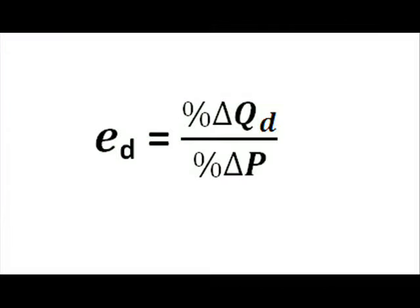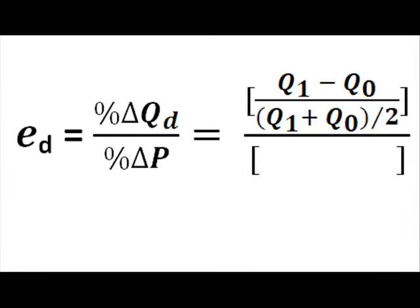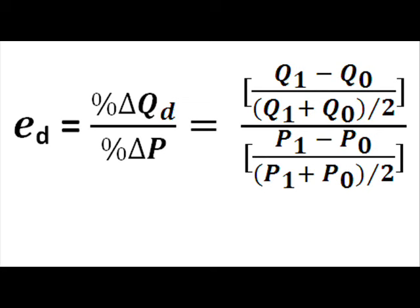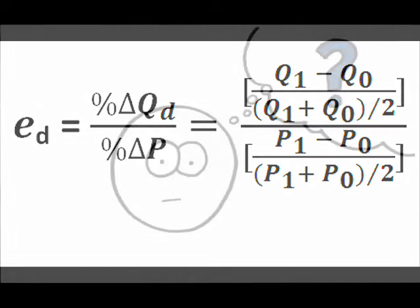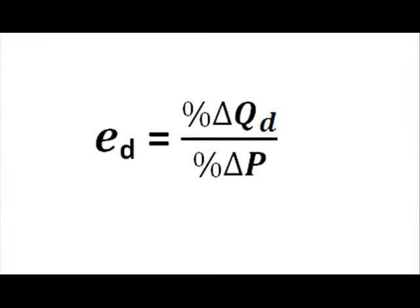Now technically, the formula for elasticity of demand is the percentage change in quantity demanded over the percentage change in price, which can be found by taking the ratio of the difference between the new and old quantities over the average of the new and old quantities, all over the ratio of the difference between the new and old price over the average of the new and old prices. Frankly, I've found that if I use this version of the formula, students' eyes glaze over. People get so hung up on the math that they lose sight of the intuition and what elasticity means. So I'll be sticking to the slightly easier form.